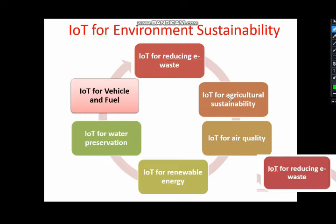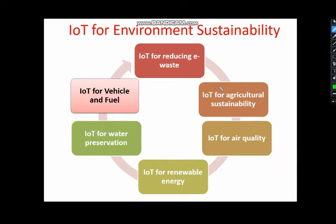Similarly, in agriculture sustainability, IoT can also be used because a lot of waste is produced in agriculture. IoT devices can be used to sense agricultural conditions, manage irrigation, and accomplish many other tasks.